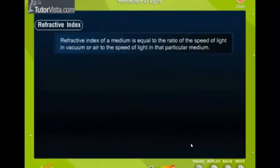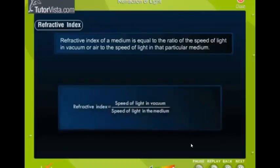Refractive index of a medium is equal to the ratio of the speed of light in vacuum or air to the speed of light in that particular medium. This ratio is always a constant for a given pair of media. It is represented by a Greek letter mu.